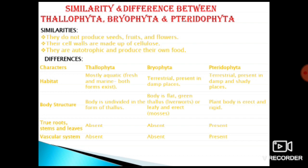Examples: Thallophyta includes algae, fungi, and lichens. Bryophyta includes liverworts, hornworts, mosses, Funaria, and Marcantia. Pteridophyta includes ferns, Lycopodium, and Pteris. This concludes our study of cryptogams and their three divisions — Thallophyta, Bryophyta, and Pteridophyta.